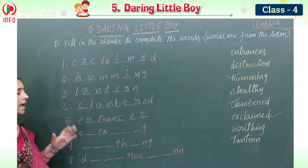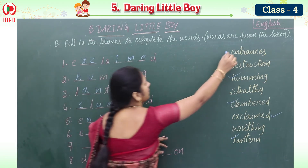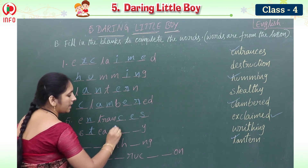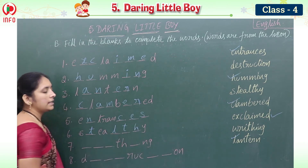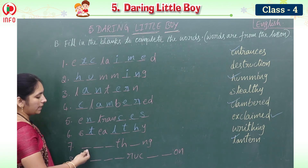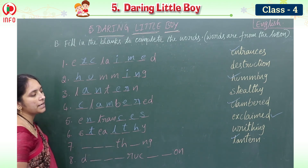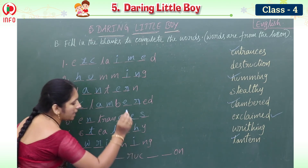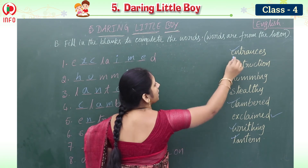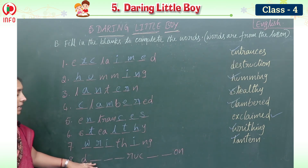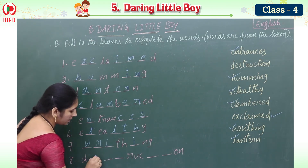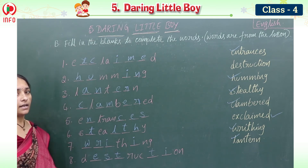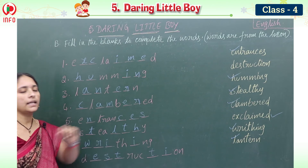S _ E A _ _ _ Y is stealthy — S-T-E-A-L-T-H-Y. Then _ _ _ T H _ N G is writhing — W-R-I-T-H-I-N-G. And the last one is destruction — D-E-S-T-R-U-C-T-I-O-N. So the eight words from the lesson are: exclaimed, humming, lantern, clambered, entrances, stealthy, writhing, and destruction.